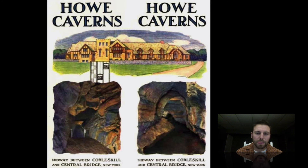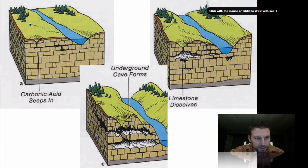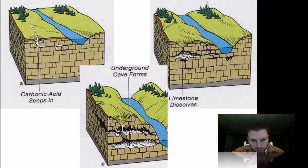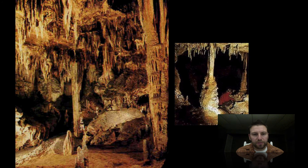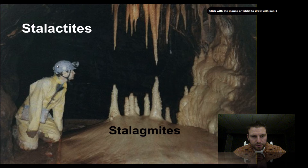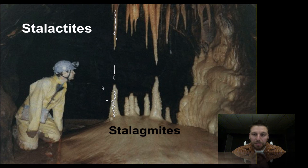As water comes through limestone it helps break it down. The caves form as water seeps in, breaking down more and more limestone over time. Cool features known as stalactites and stalagmites form — as the limestone breaks down, water drips and deposits small amounts of minerals. Stalactites grow from the ceiling; stalagmites pile up from the bottom.